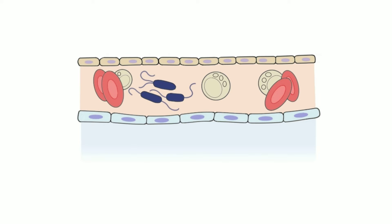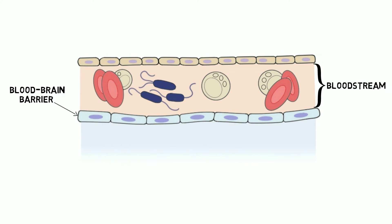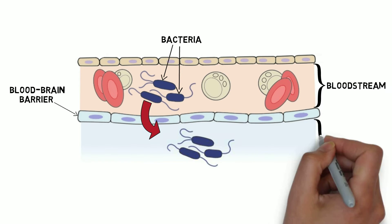Although the central nervous system is separated from the bloodstream by barriers like the blood-brain barrier and blood-cerebrospinal fluid barrier, meningitis can occur when pathogens evade these types of barriers and enter the meninges.